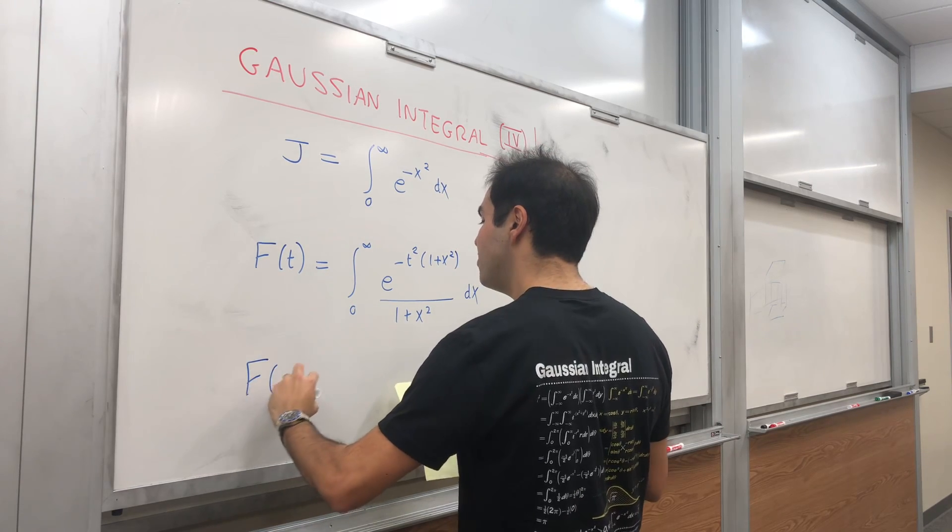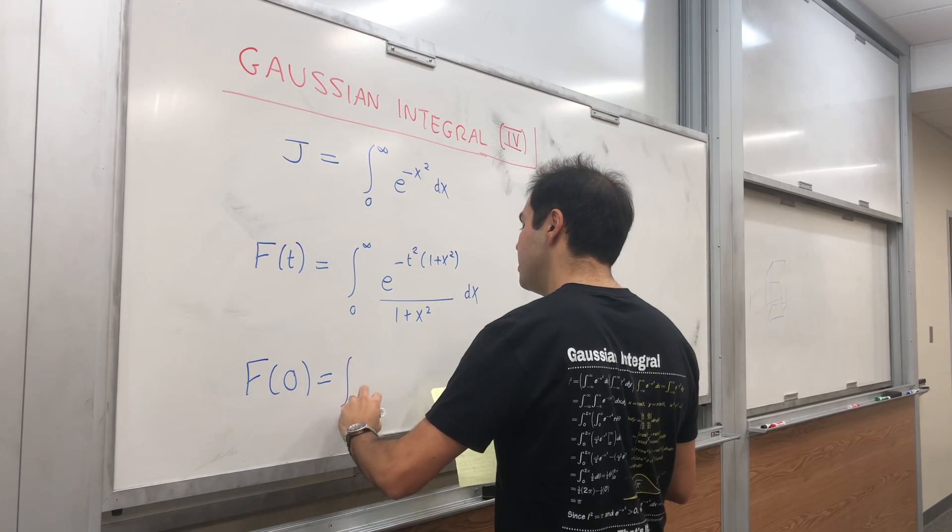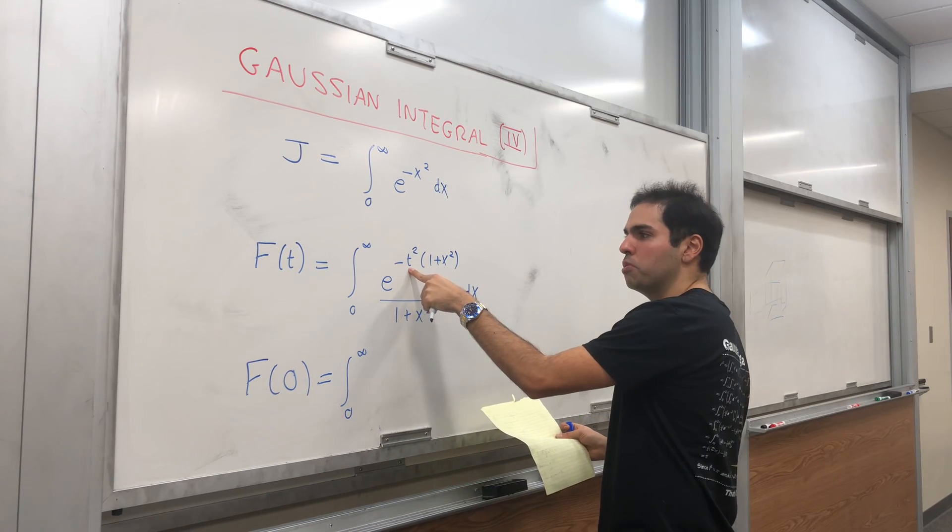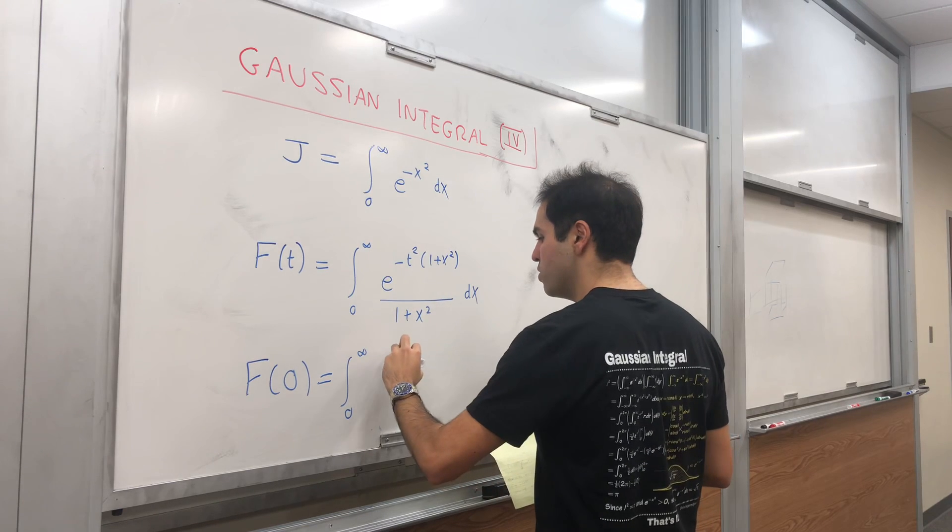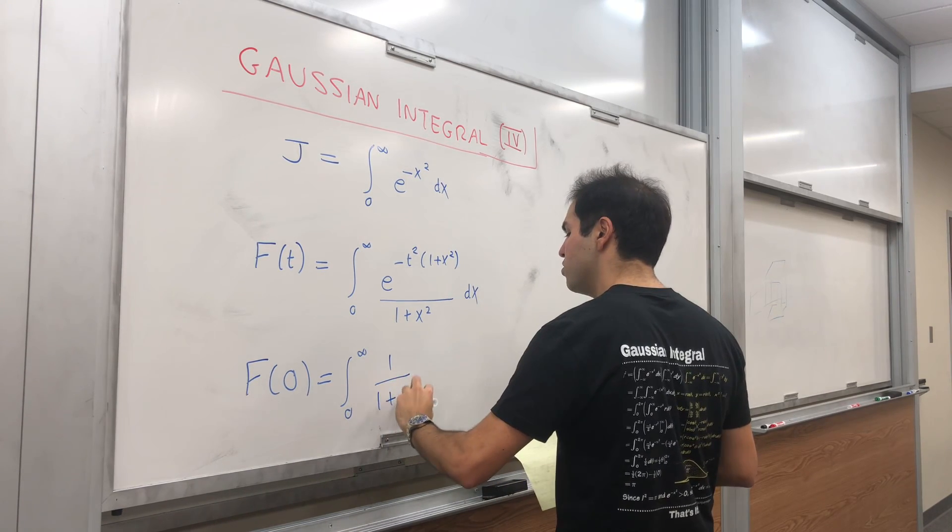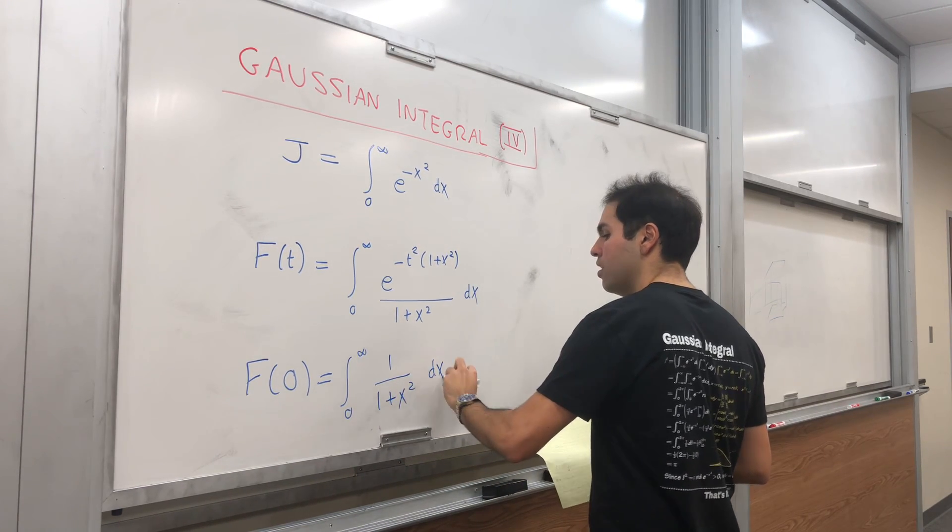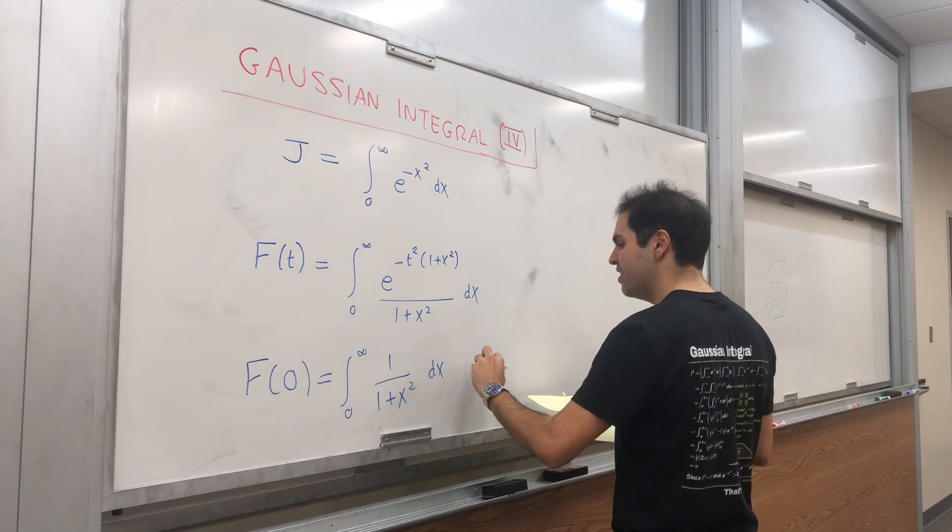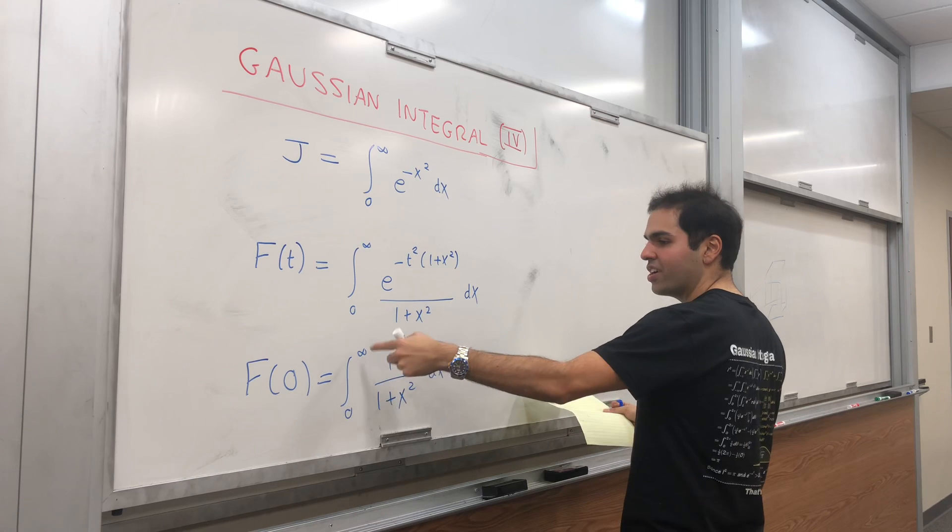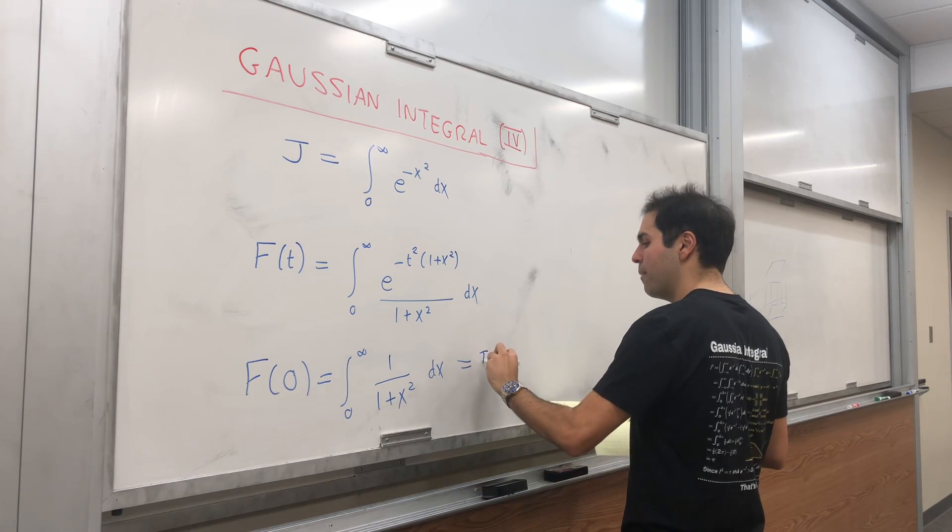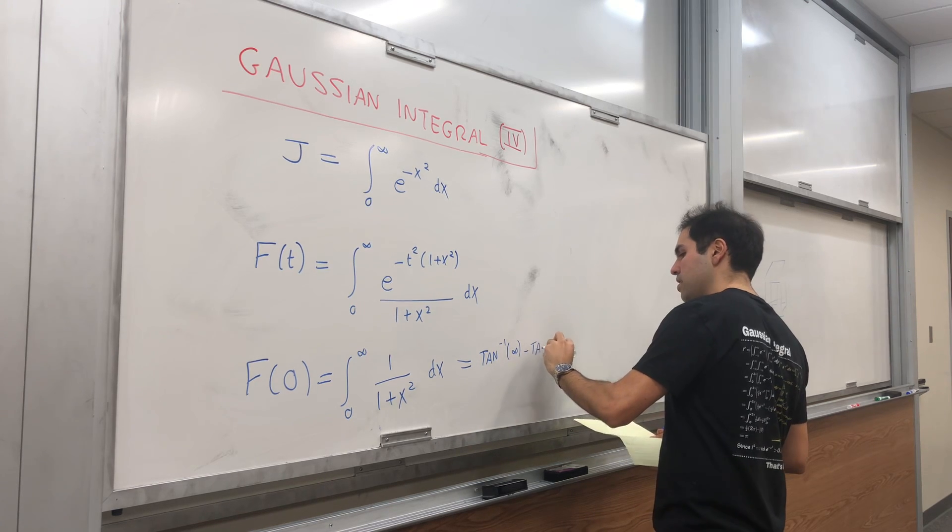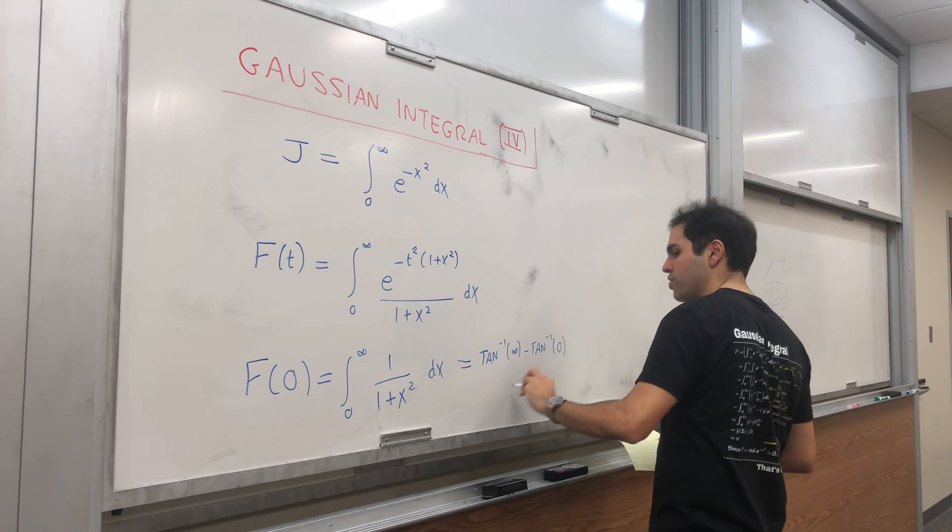So, first of all, f of zero equals to the integral from zero to infinity. If you plug in t equals to zero here, you get e of zero, which is one. And so this becomes integral of one over one plus x squared from zero to infinity. And that is just arctangent of infinity minus arctangent of zero. And that's just pi over two.